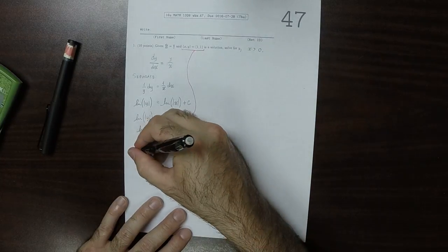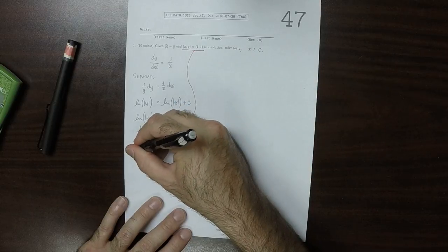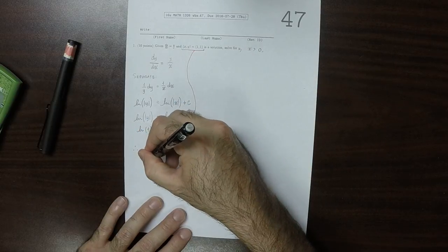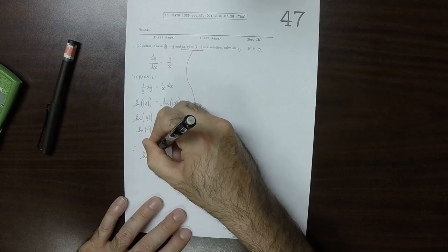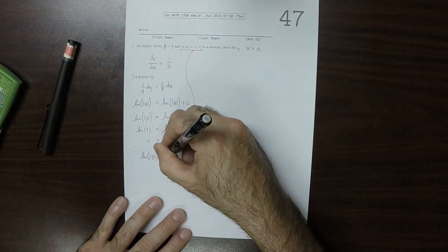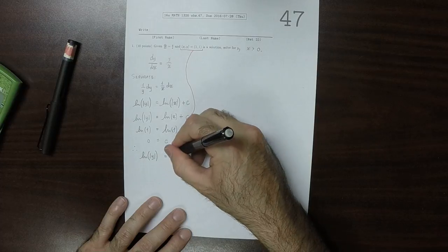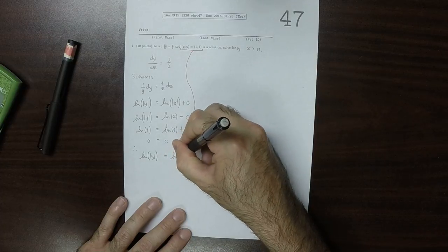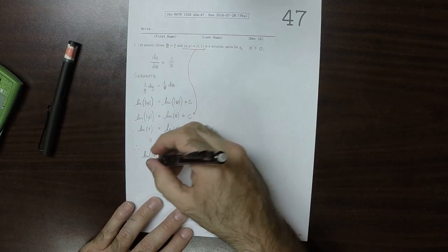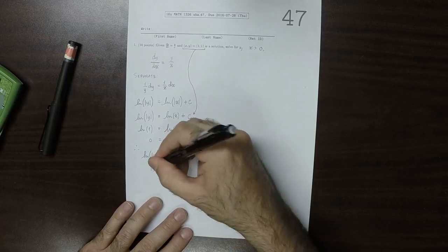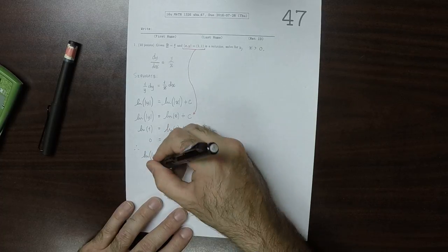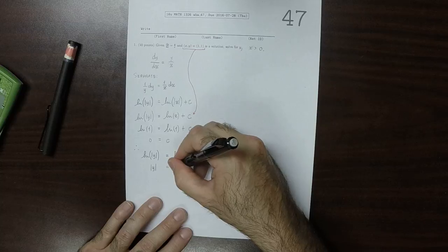Therefore, we know that the log of the absolute value of y is log of x. We can exponentiate both sides to obtain absolute y is x.